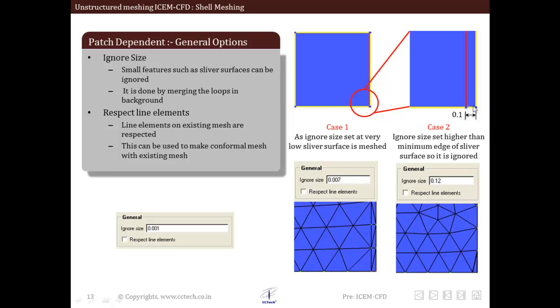So we can change this ignore size depending upon what type of gaps, sliver surface gaps, or sliver surface entities we have, and make sure that we don't have such kind of cases where a very bad quality mesh is generated within the sliver surface gap.